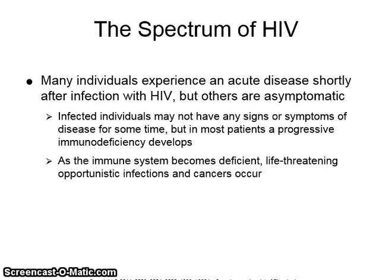This type of lymphocyte participates in cell-mediated immunity and in regulating the immune response. Many individuals experience an acute disease shortly after infection with HIV, but others are asymptomatic. Infected individuals may not have any signs or symptoms of disease for some time, but in most patients a progressive immunodeficiency develops. As the immune system becomes deficient, life-threatening opportunistic infections and cancers occur.